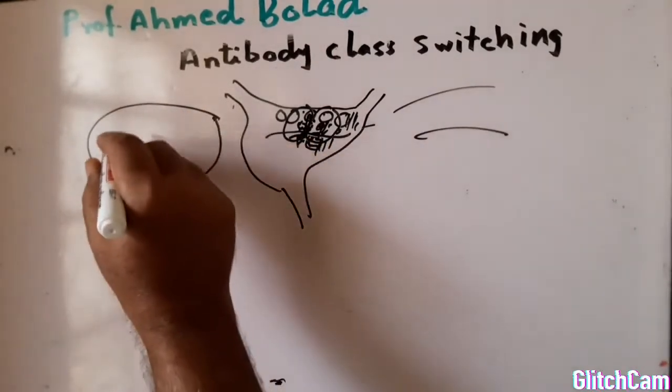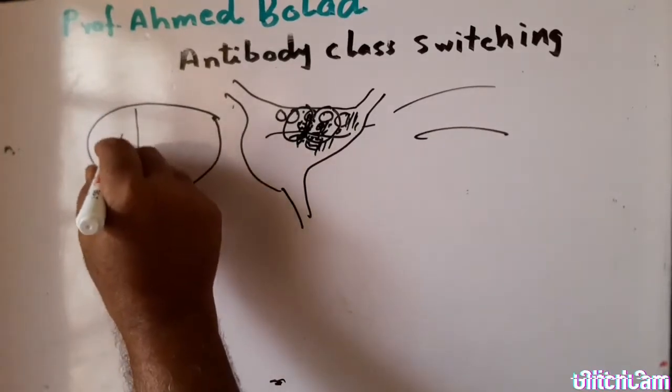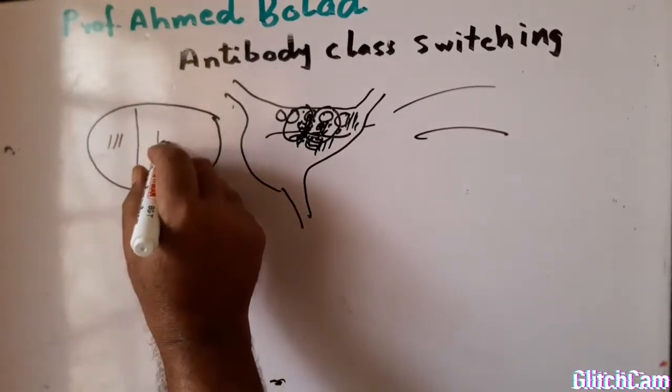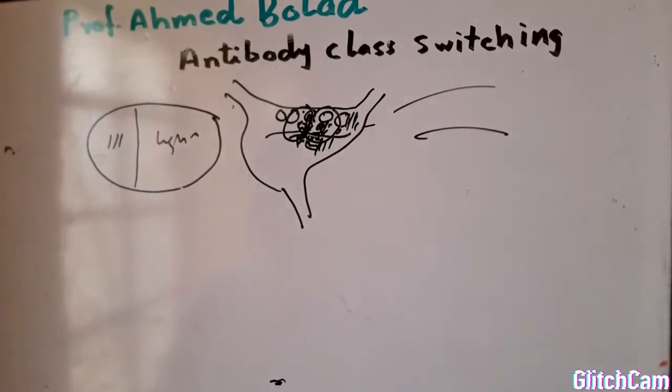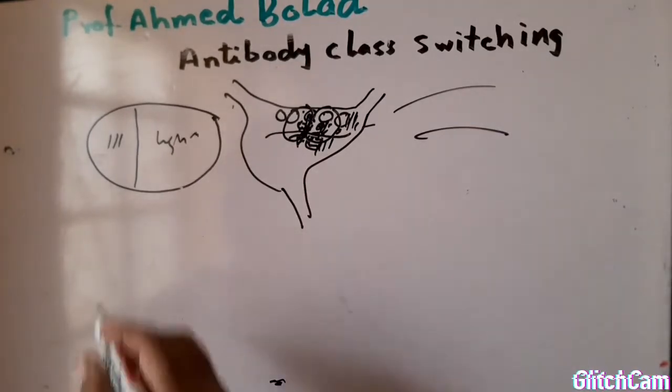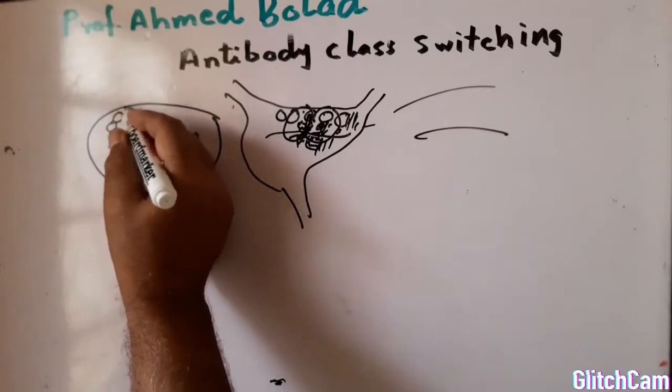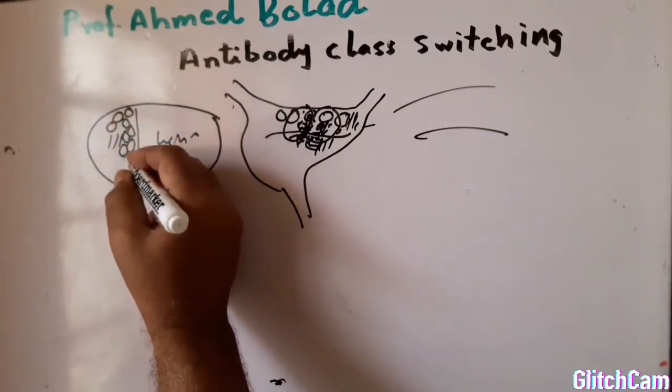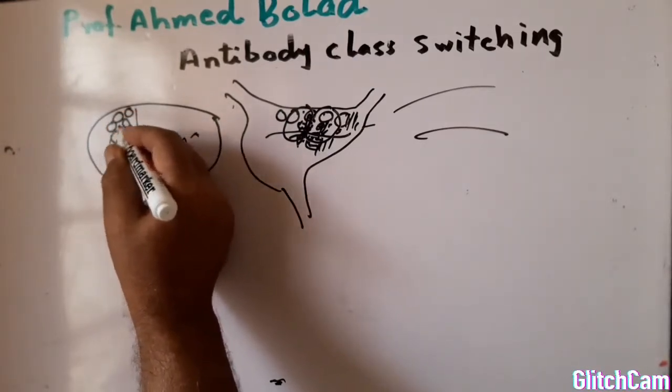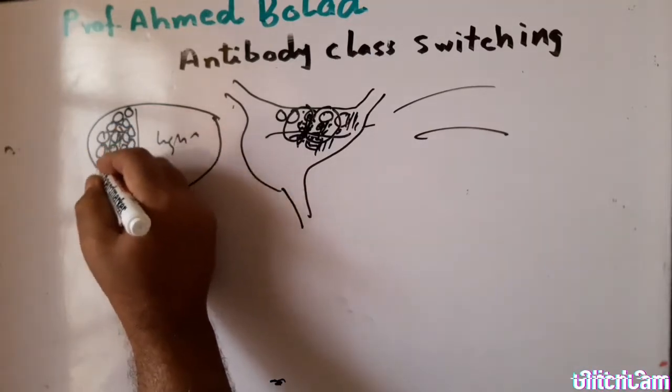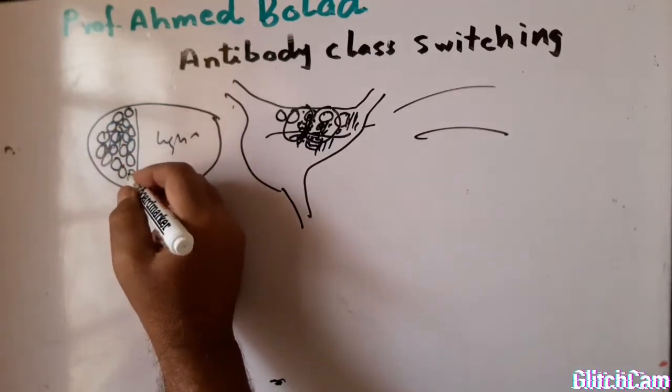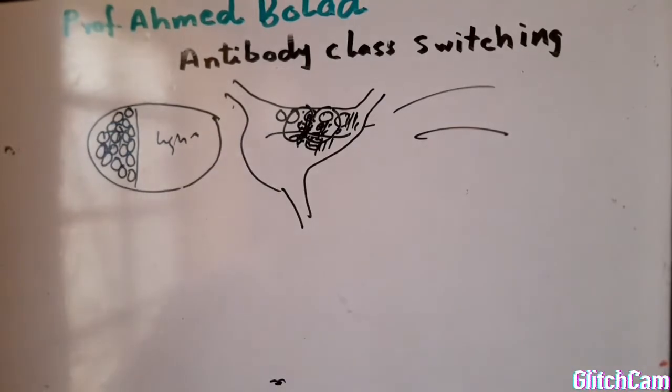The germinal center has dark zones and light zones. B lymphocytes differentiate intensely in this dark zone, which leads to clonal expansion. Another process will take place known as somatic hypermutation.